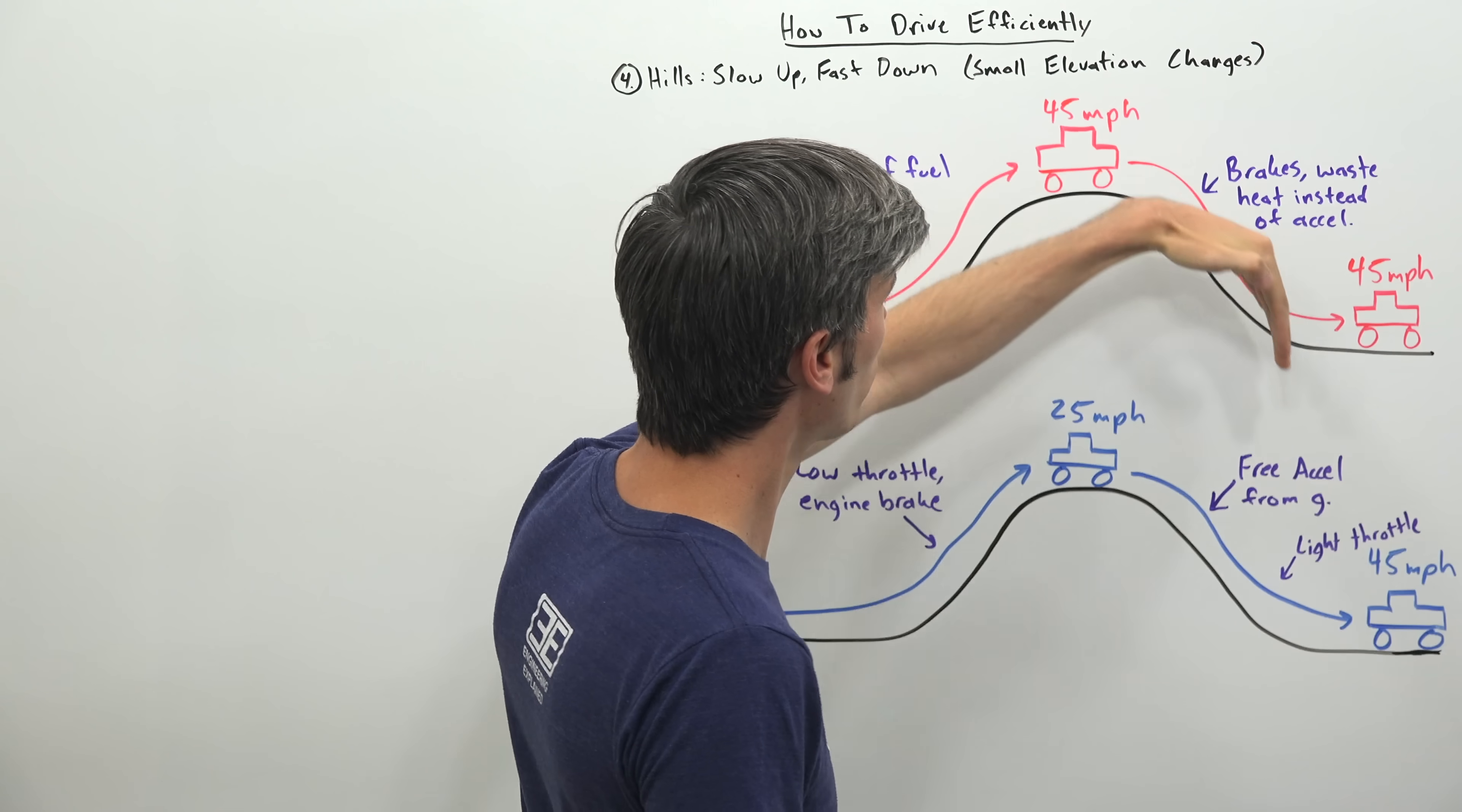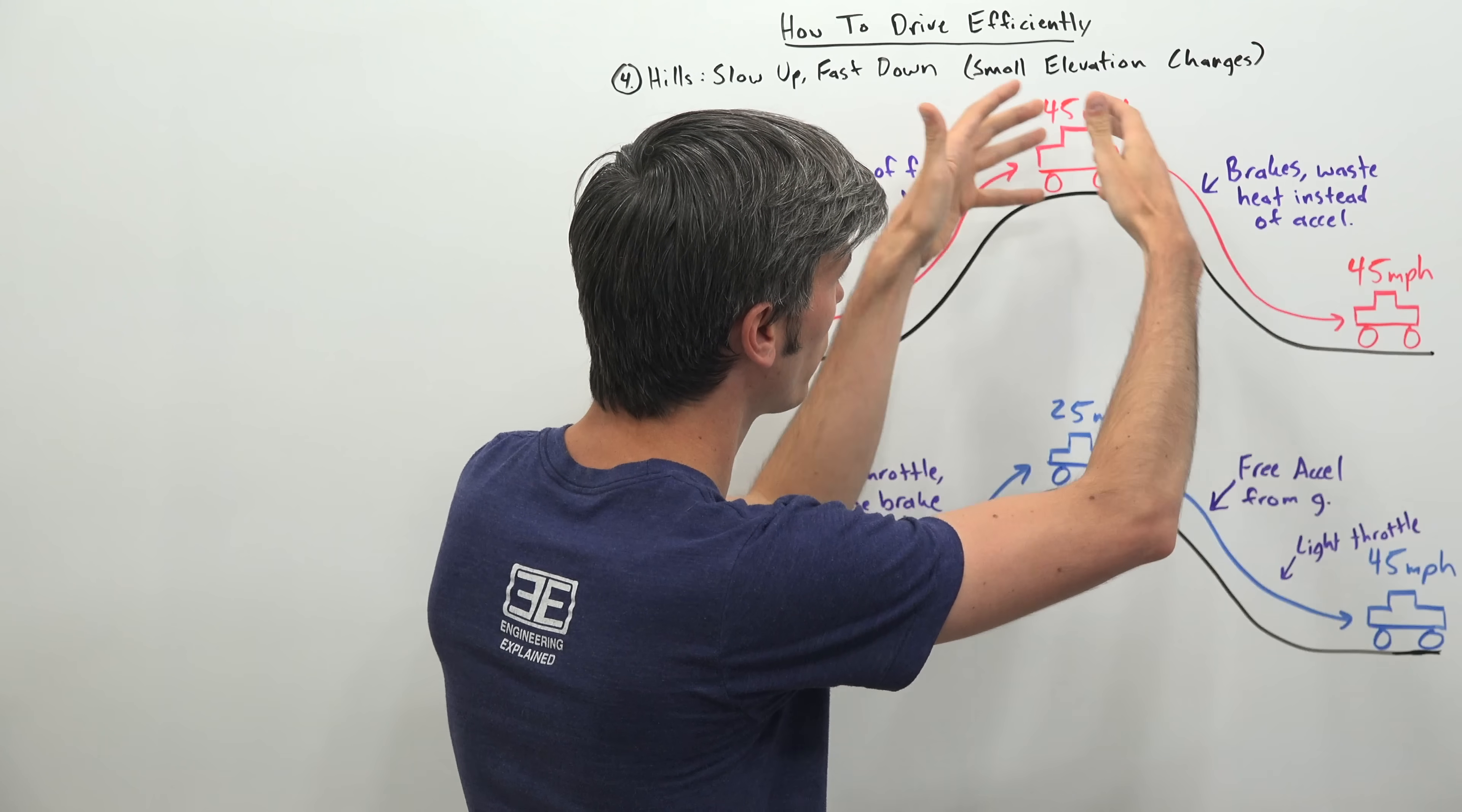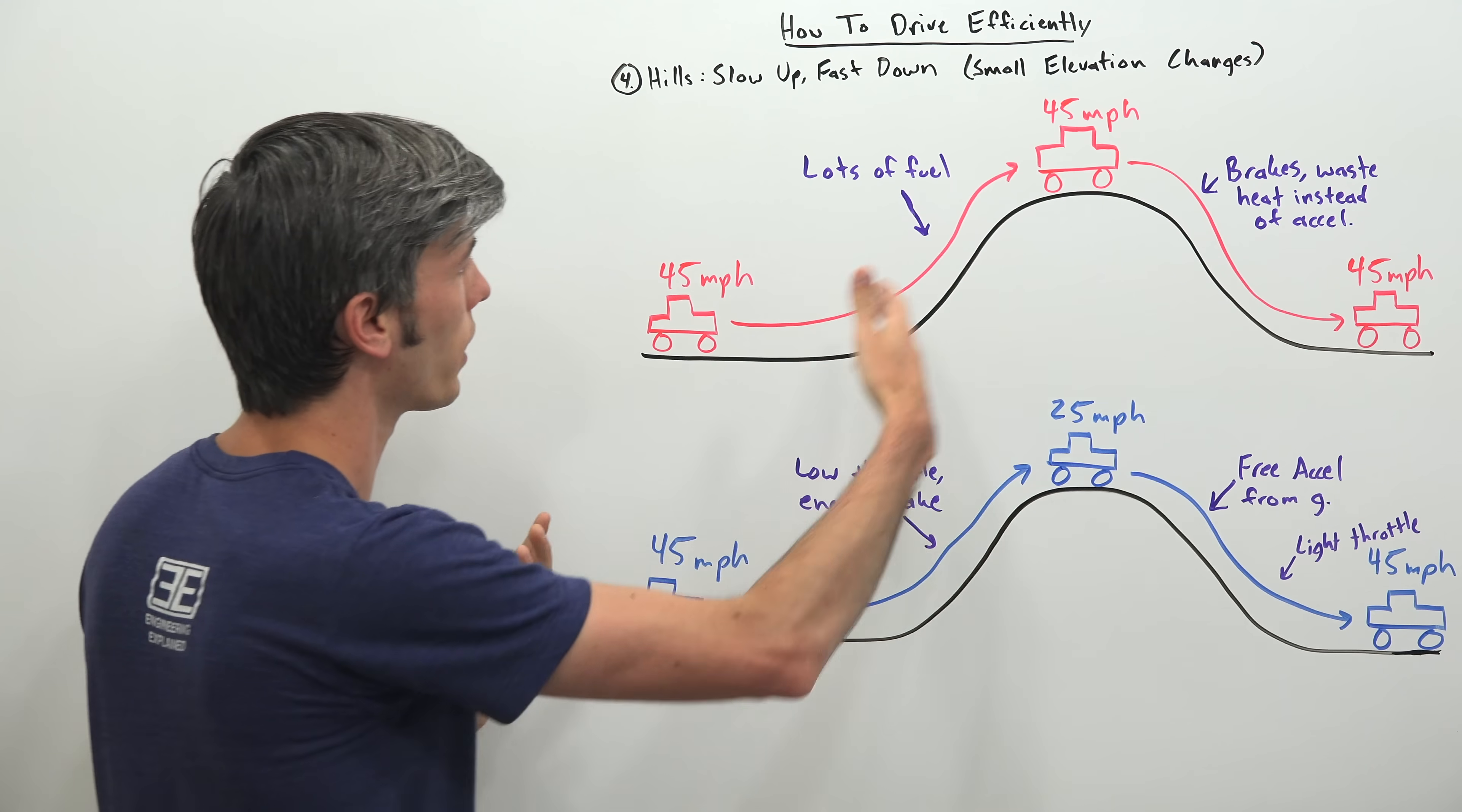And you're using your brakes to maintain yourself, your speed at 45 miles per hour. So you're wasting the energy. You could be getting free acceleration basically here from gravity. Yes, you had to work to get up there. But then you can use that gravity to overcome some of the fuel that you've lost. To bring you back up to speed. But instead you're using your brakes because you're already at the speed limit. So in this scenario, you're doing everything wrong as far as an efficient way of getting over this hill.